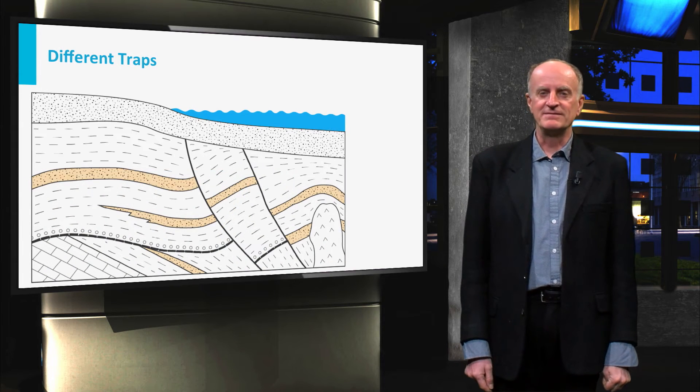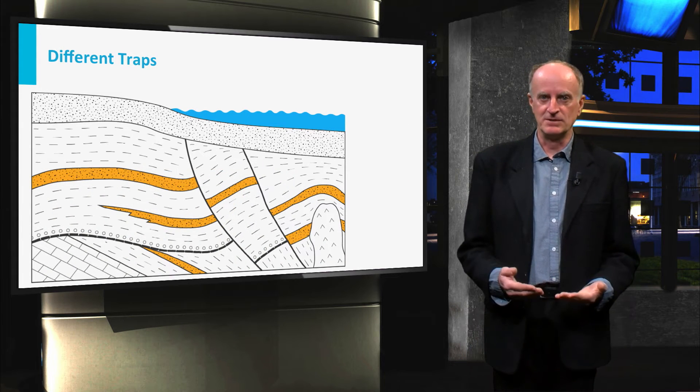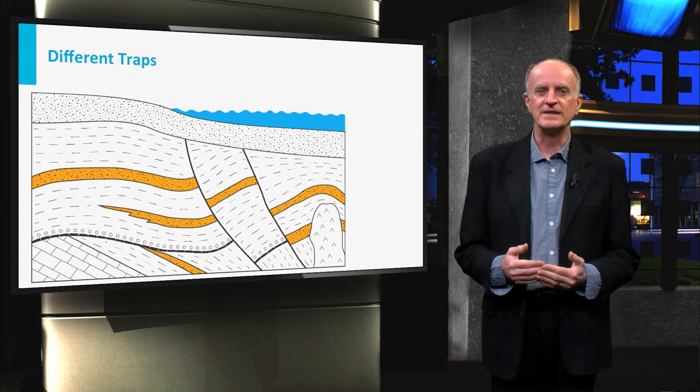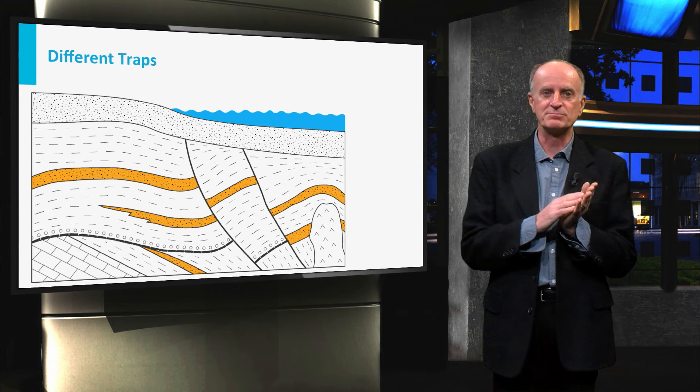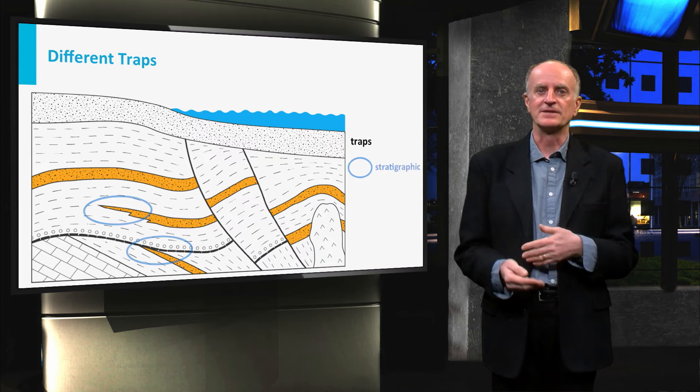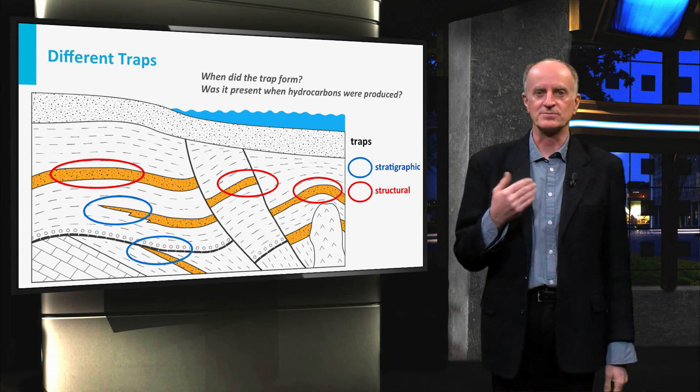For a trap to be effective, the reservoir layer and the seal must be structured in such a way that movement of hydrocarbons is prevented. This can happen as a result of sedimentary or structural processes.